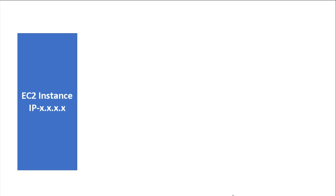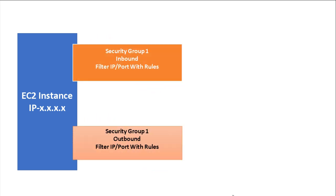This is the EC2 instance with a public IP address such as x.x.x.x. You have assigned two Security Groups — Security Group 1 for inbound and Security Group 1 for outbound. The port and IP are configured here to allow traffic. In a Security Group you can only create allow rules, not deny rules.